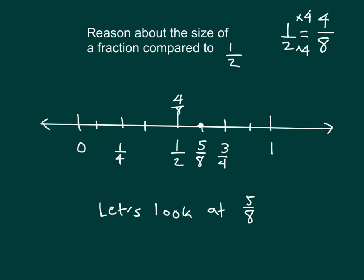So to count by eighths, we have 0, 1/8, 2/8, 3/8, 4/8, 5/8, 6/8 which does equal 3/4, 7/8, and 1. So I placed 5/8 onto our number line, and we know it is bigger than 1/2.